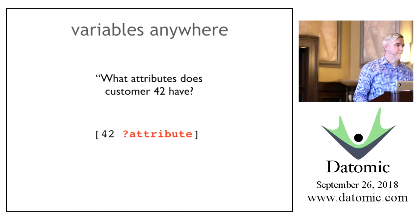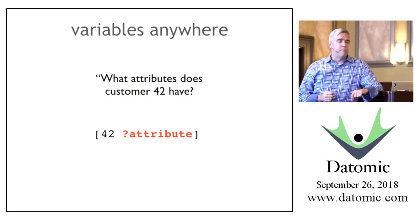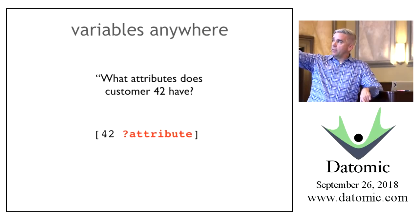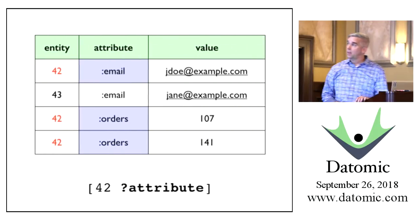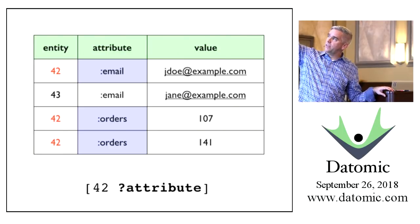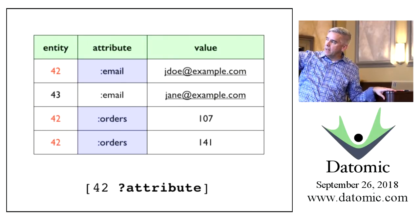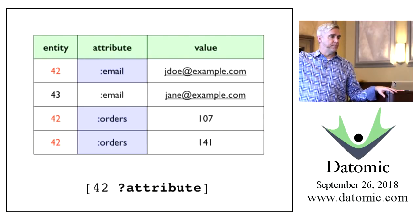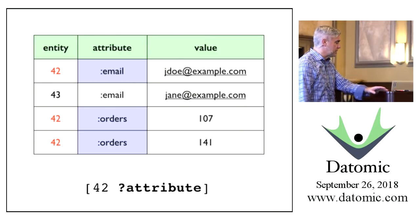Variables can appear anywhere. This query is about what attributes entity 42 has—not their values. Any time you leave stuff off the end, that means you didn't care. It always starts entity, attribute, value; leaving off the value means we just want the attributes. When you evaluate this pattern against four datums, you get three rows back, but the attribute variable will only have two values—because this is set-based, and orders is the same as orders, so it matches once.